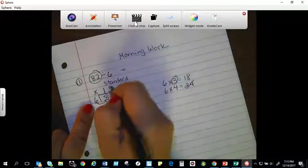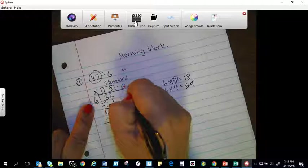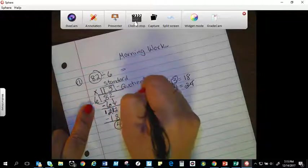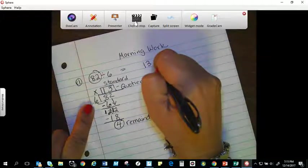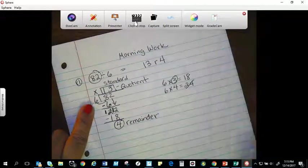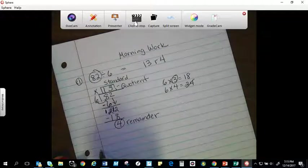This number here is less than my divisor, so this will now be my remainder. My answer, this is my quotient, and my answer will be thirteen with a remainder of four.